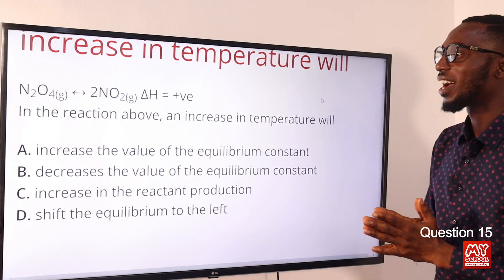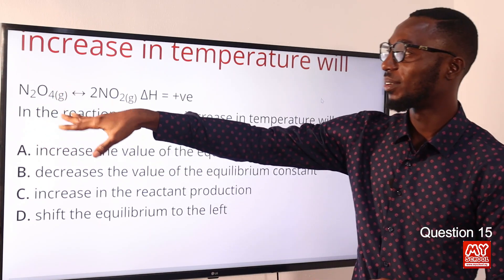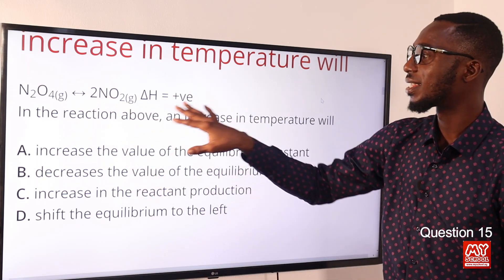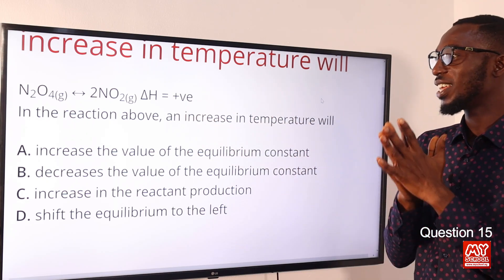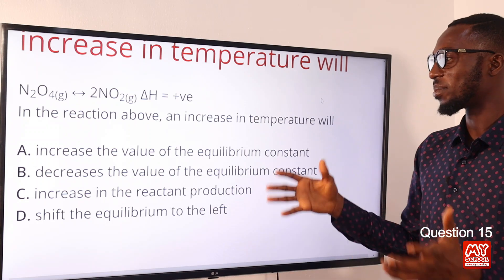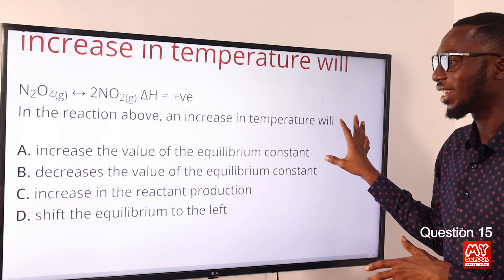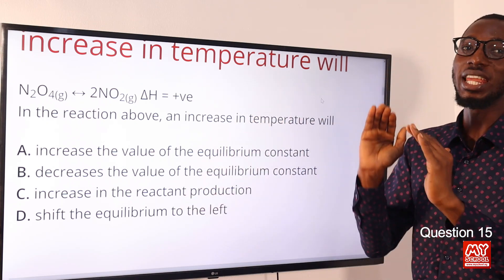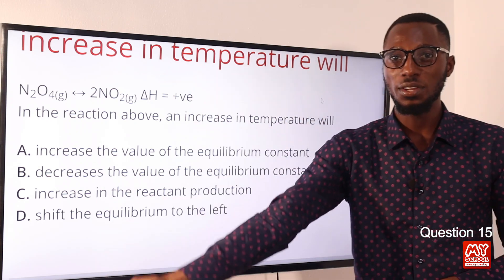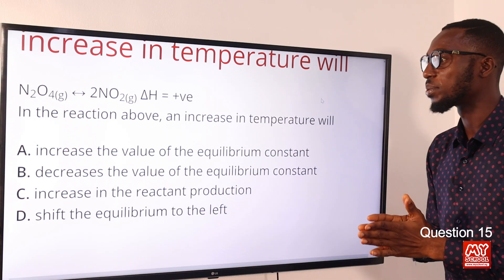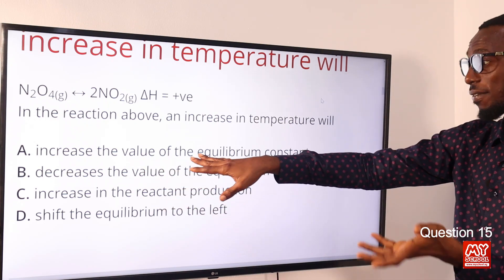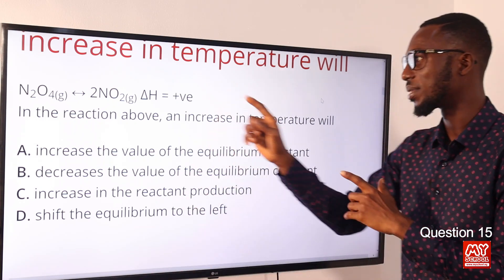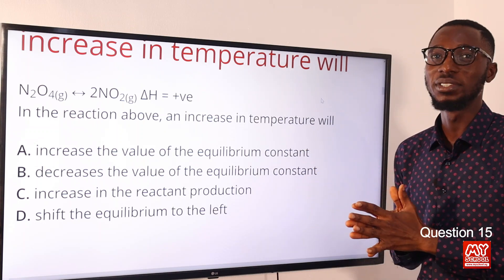Question 15: We have dinitrogen tetroxide (N₂O₄) decomposing to give nitrogen dioxide (NO₂). This is an endothermic reaction. Following Le Chatelier's principle, an increase in temperature will cause the equilibrium position to shift to the right, and the equilibrium constant K will increase in value, favoring the forward reaction. The correct option is option A.